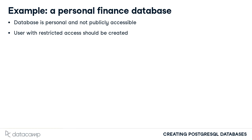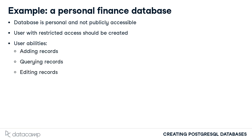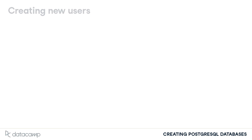The user will perform operations specific to this database, such as adding records to tables, querying records in the database, and editing records. You might have the need to change the structure of the database by adding a new column or changing the data type of a column, but when such a need arises, the PostgreSQL user is still available for such tasks. Therefore, one of the first things that you will want to do when creating a new database is to create a user or users with database access restrictions.